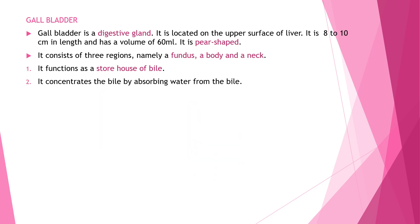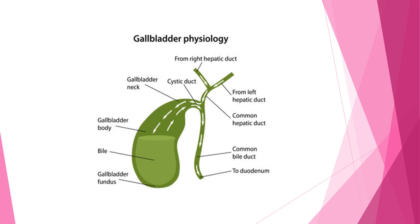The gallbladder is a digestive gland located on the upper surface of the liver. It is 8 to 10 cm in length and has a volume of 60 ml. It is pear-shaped and consists of three regions: fundus, body, and neck. It functions as a storehouse of bile and concentrates the bile by absorbing water from it.